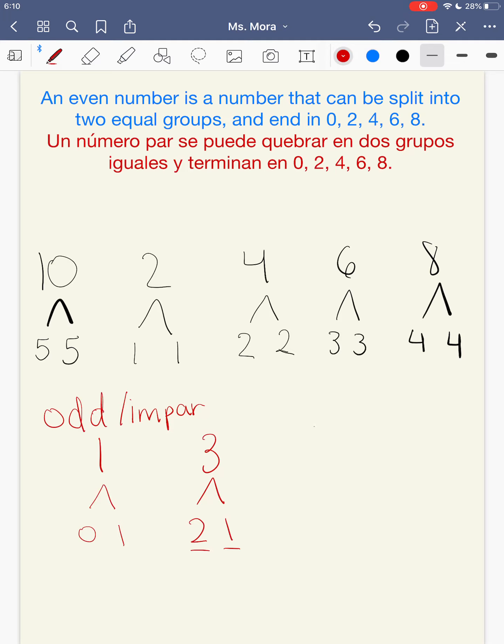Then we have 5. You can add 4 and 1. Those are not equal groups. Or you could add 3 and 2. Those are not equal groups. So 5 is not even. It's called odd. El número 5 es impar, porque cuando sumas dos grupos, tus grupos no son iguales. 3 y 2 no son iguales. Y 4 y 1 tampoco eran iguales.